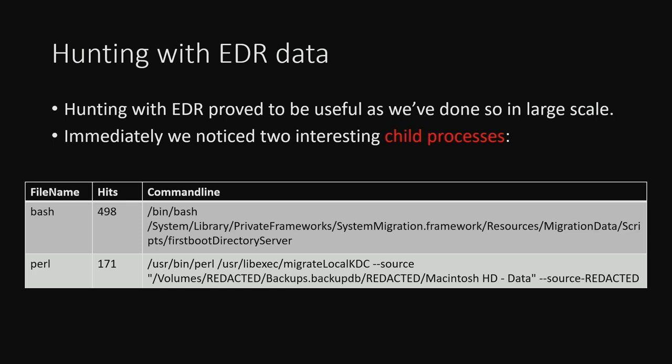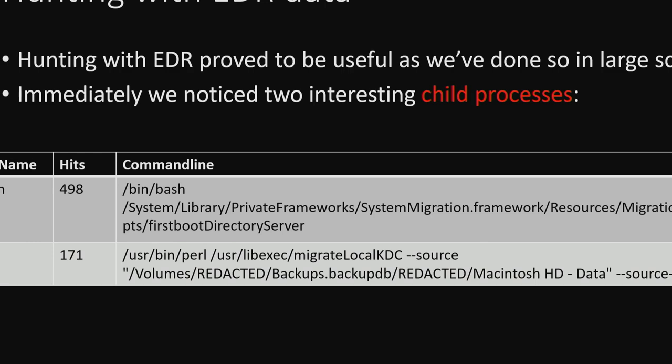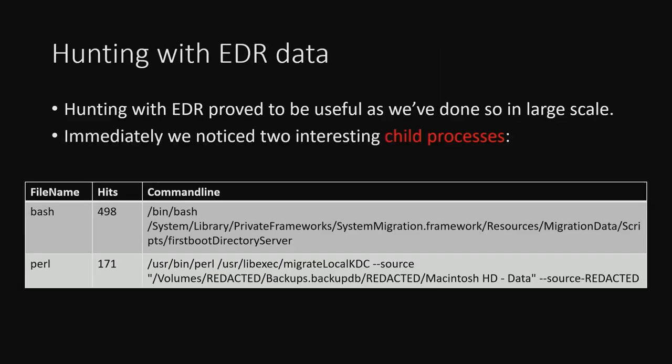Any EDR worth its salt can ask questions like 'give me all the processes that have such-and-such command line.' We're Microsoft, we have an EDR, we have tons of data even from macOS. So we started hunting with EDR data across different customers and environments. We asked the EDR to give us all the child processes of systemMigrationD, and we immediately noticed two interesting child processes: Bash and Perl. These are child processes of systemMigrationD, so they're very powerful in terms of SIP-bypassing capabilities.